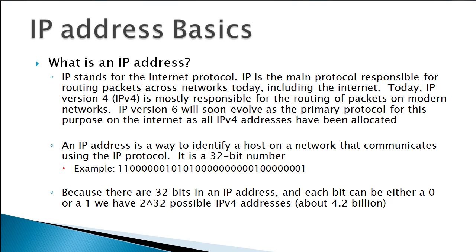Now that we know a little bit about the IP protocol, what is an IP address? Simply, if we're running the IP protocol, we need a way to address all the different hosts on all of our different networks. So an IP address is basically a way to identify a host on a network that communicates using the IP protocol. Specifically, it's a 32-bit number — that big long bit string you see right here is an example of a 32-bit IP address.